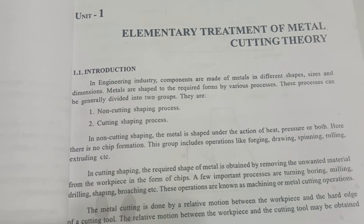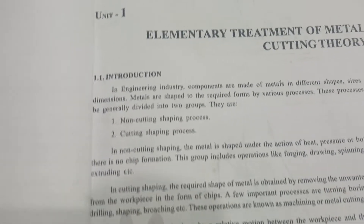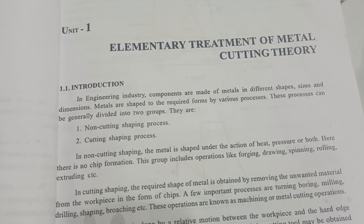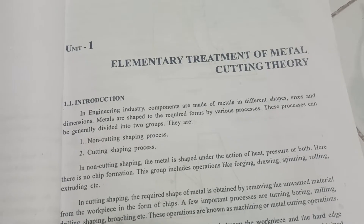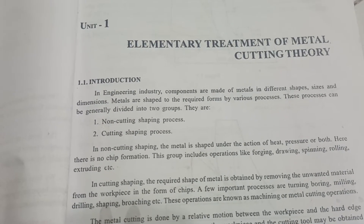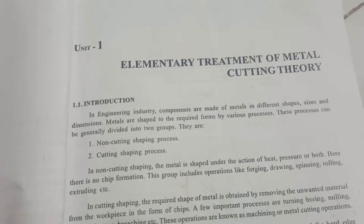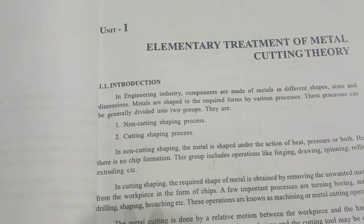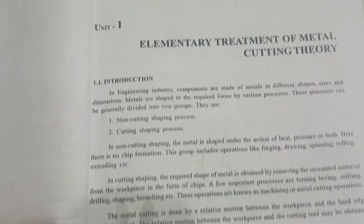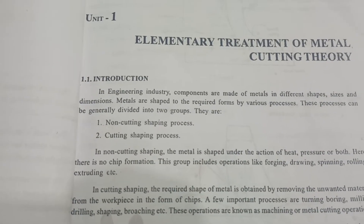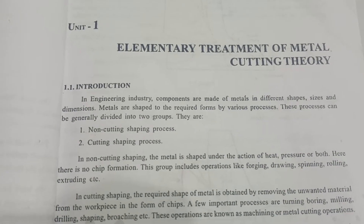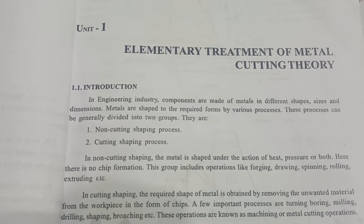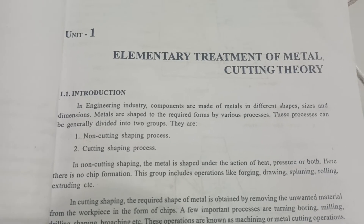In the engineering industry, components are made of metals in different shapes, sizes and dimensions. Metals are shaped to the required forms by various processes. These processes can be generally divided into two groups: non-cutting shaping process and cutting shaping process. In non-cutting shaping, the metal is shaped under the action of heat, pressure, or both, and there is no chip formation.